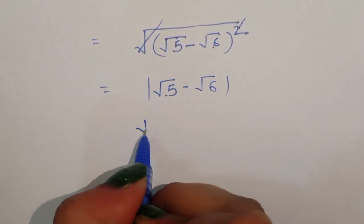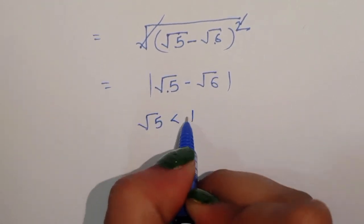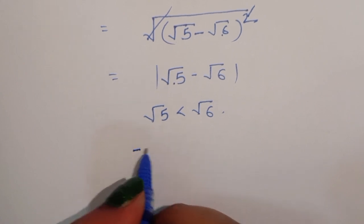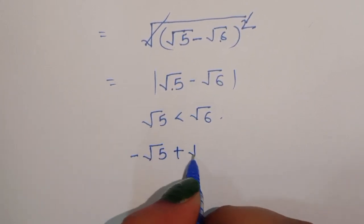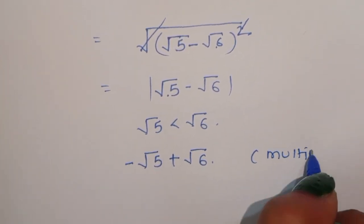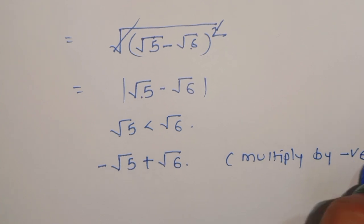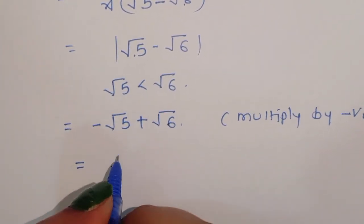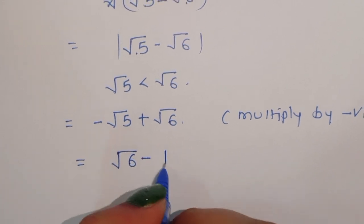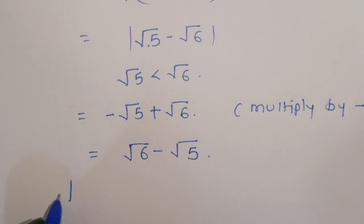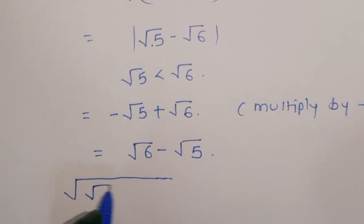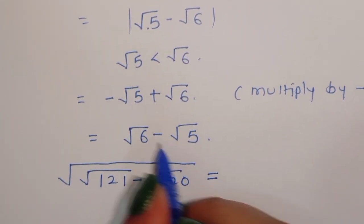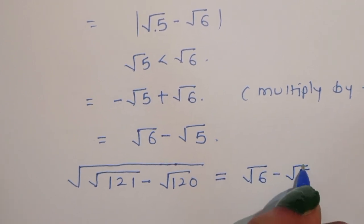Since √5 is less than √6, we multiply by a negative sign, giving us √6 - √5. So the final answer is: √(√121 - √120) = √6 - √5. This is the solution.